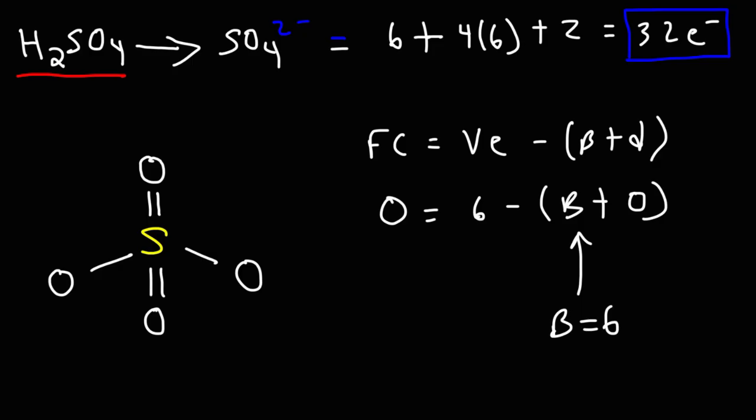Oxygen is a second row element. It cannot have more than eight electrons. Oxygen must obey the octet rule in the sense that it will never have nine or ten electrons. So anytime oxygen has two bonds, it's going to have two lone pairs. And anytime oxygen has one bond, it's going to have three lone pairs, unless of course you're dealing with an oxygen radical.